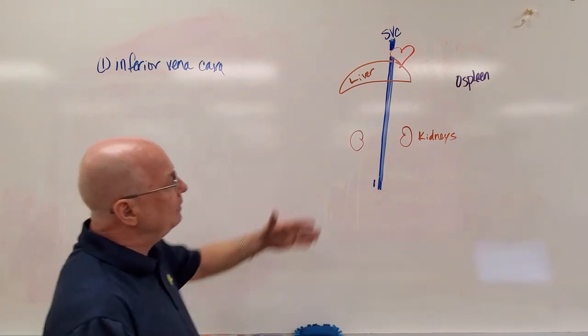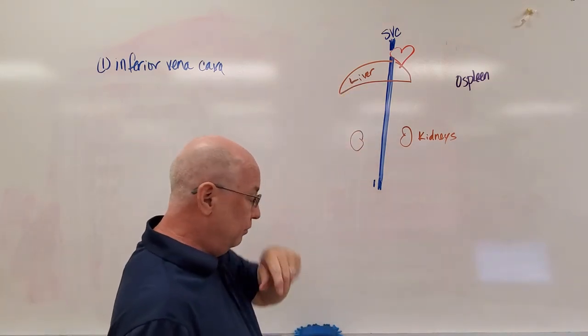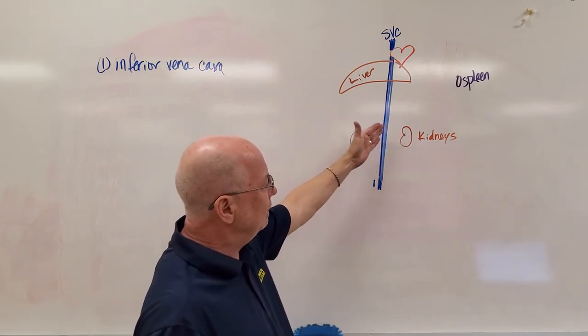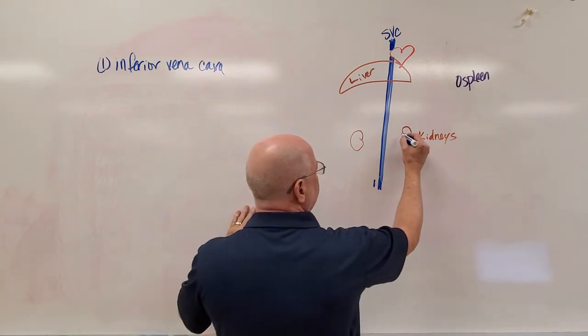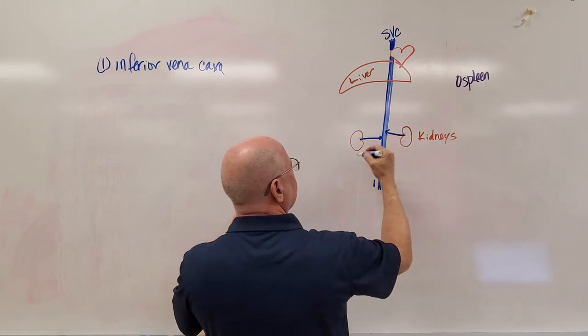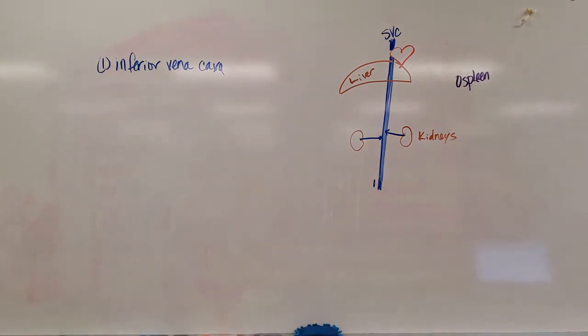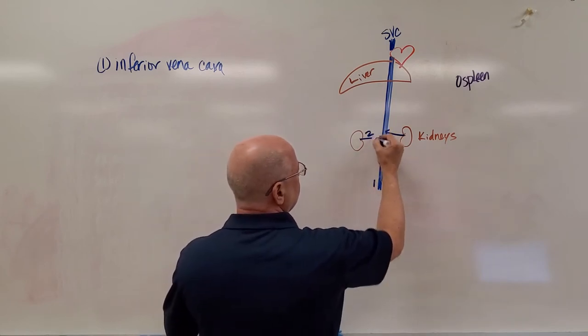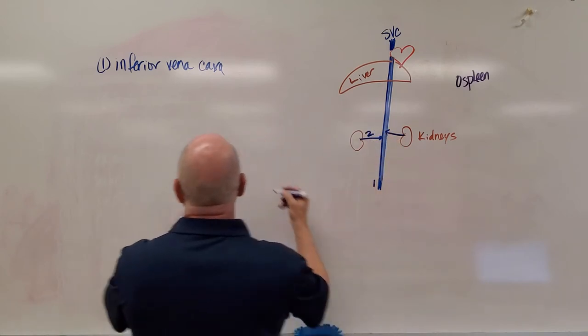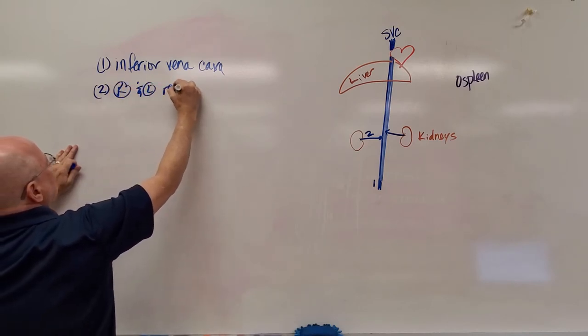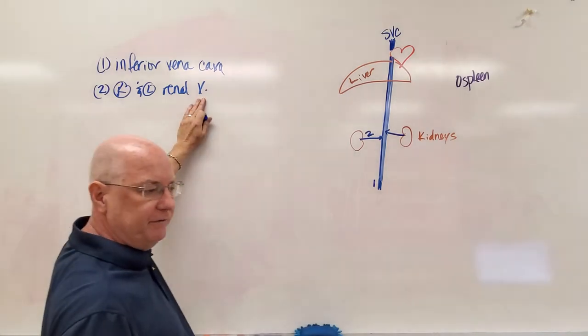Now, if I come down the inferior vena cava, really only two sets of veins go from the organ into the inferior vena cava directly. We have the renal veins, which come in like this. And you know, when you look at the model, the left kidney is just a little bit higher than the right kidney. And so they join at a slightly different point. But these two vessels here would be our right and left renal veins. Again, I'm going to abbreviate V for vein.